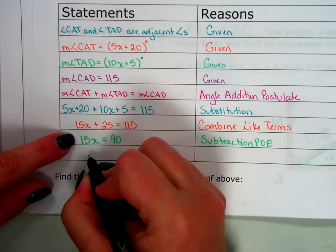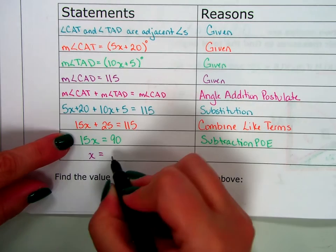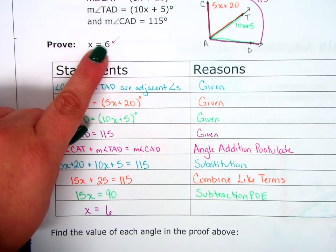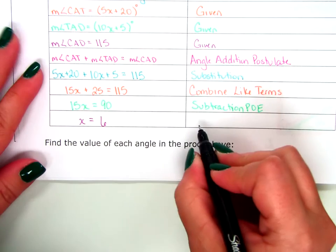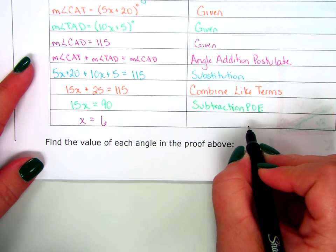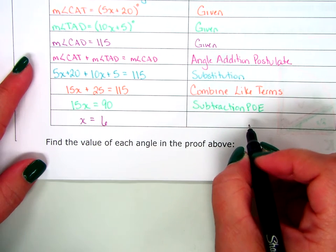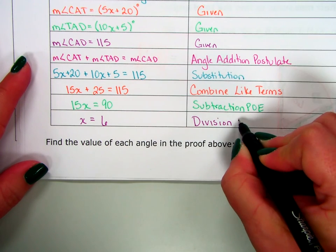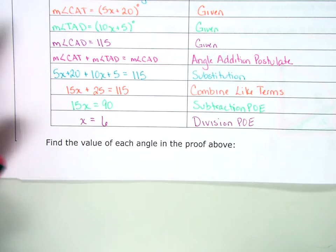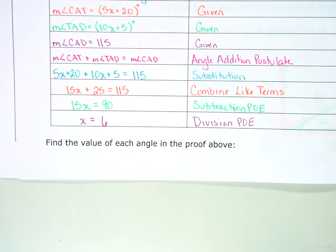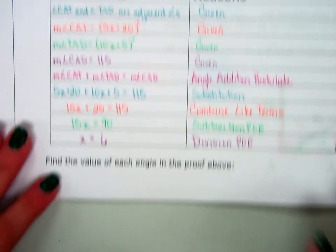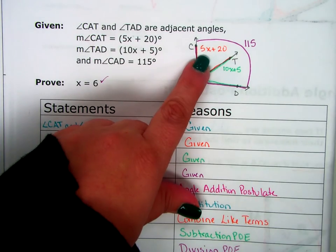And then what am I going to do? Division property of equality. So I'm going to divide both sides by 15. 15 X over 15 is just 1 X. And 90 divided by 15 is 6, which is what we were trying to find. I was trying to prove that X equals 6. So can I write prove here? I proved it? No. No, I still have, I have had kids starting to do that now. What do I put here? Division property of equality.